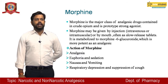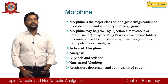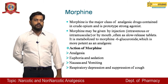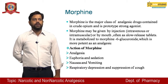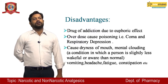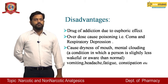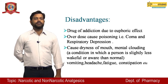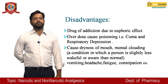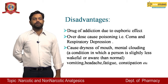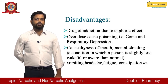Actions of morphine include analgesia, euphoria, sedation, nausea and vomiting, respiratory depression, and suppression of cough. The disadvantage of morphine is drug addiction due to its euphoric effect. Overdose may cause coma or respiratory depression. It also causes dryness of mouth and mental clouding.